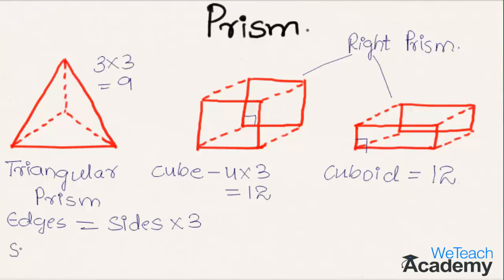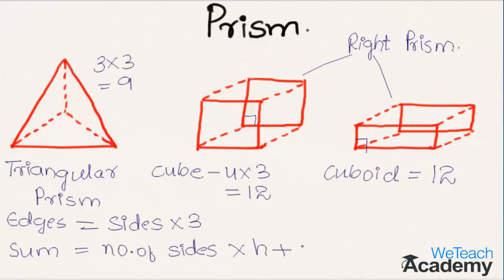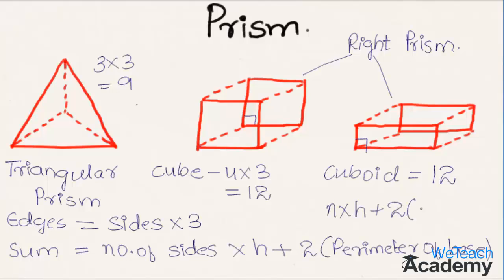Coming to the sum of lengths of edges: this is given by the formula — number of sides × height + 2 × perimeter of base. We can write this as n × h + 2s, where s represents the perimeter of the base.